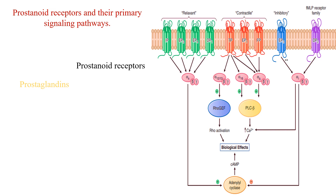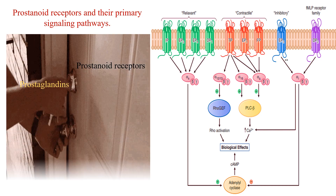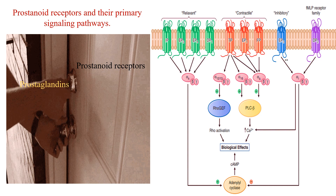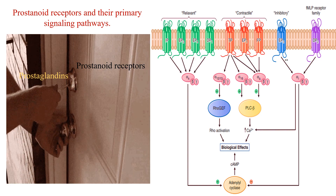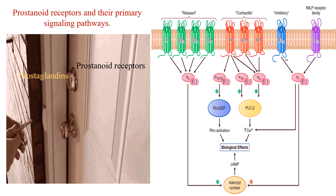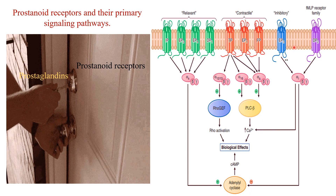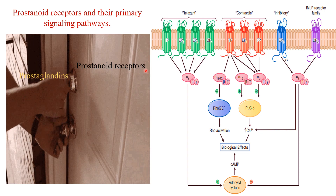Now we will study prostaglandin receptors — how and where these prostaglandins work in our body. They communicate with different parts of the body using special doorways called receptors, like locks that only prostaglandins can open. These prostaglandin receptors are meeting points where prostaglandins talk to cells and influence inflammation, childbirth, blood flow, and platelet behavior. All prostaglandin receptors are G protein-coupled receptors, and they can be classified into subtypes based on their specificity — such as prostaglandin E receptors, thromboxane receptors, and prostacyclin receptors.